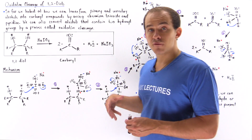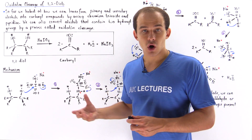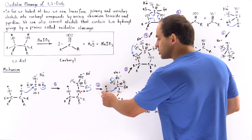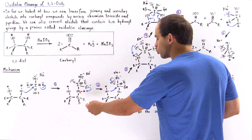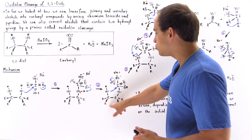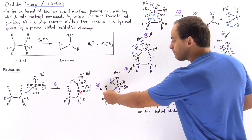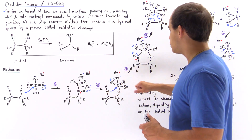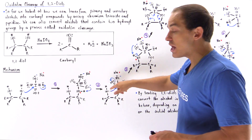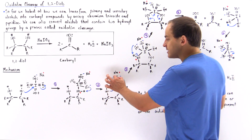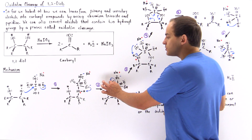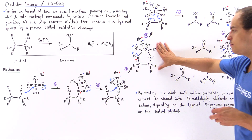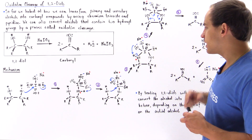In step three, we have the formation of a five-membered ring. The second oxygen on the second hydroxyl group of the 1,2-diol forms another covalent bond between that oxygen and the iodide, displacing the pi bond and placing those two electrons onto the adjacent oxygen. We form an intermediate containing a five-membered ring.